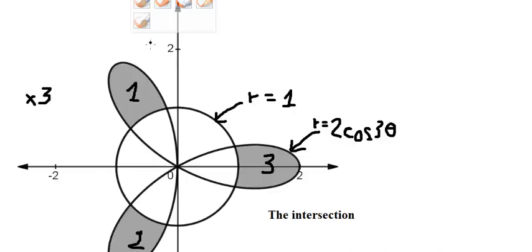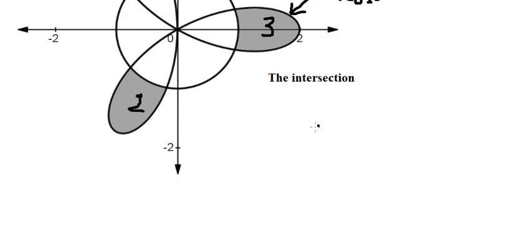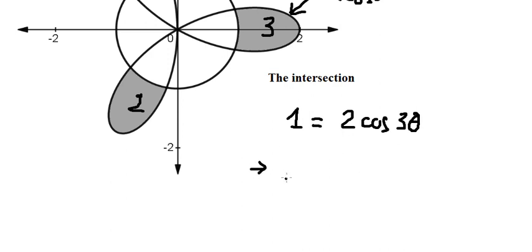We have r equals 1 and r equals 2cos(3θ). Setting them equal: 1 equals 2cos(3θ). We divide both sides by 2, giving cos(3θ) = 1/2.